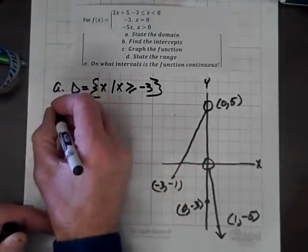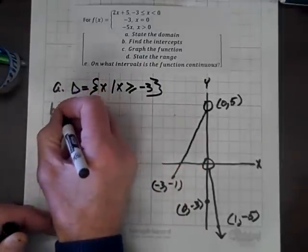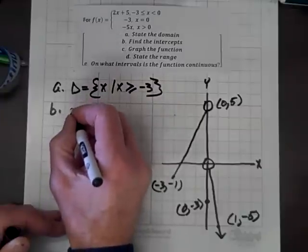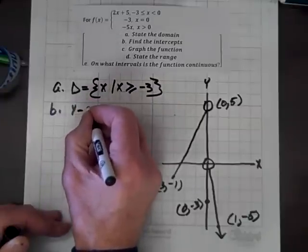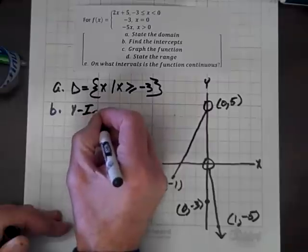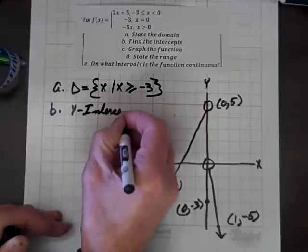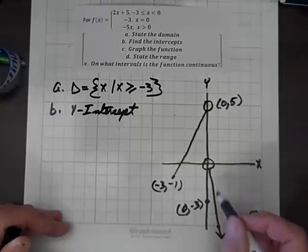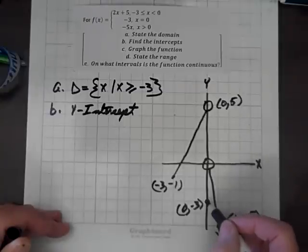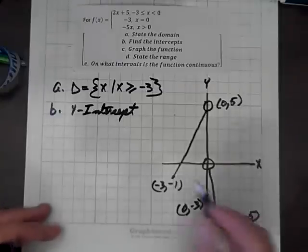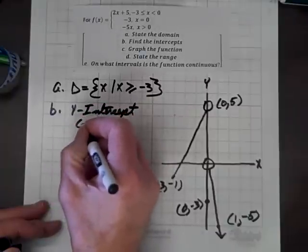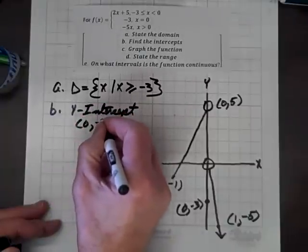Now we have to find the intercepts, part b. We'll look at the y-intercept first. We can see by inspection that the y-intercept occurs at (0, -3), so the y-intercept is (0, -3).